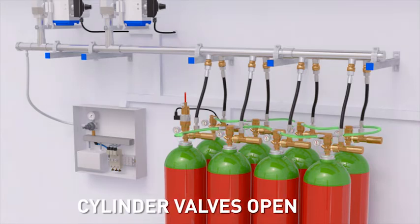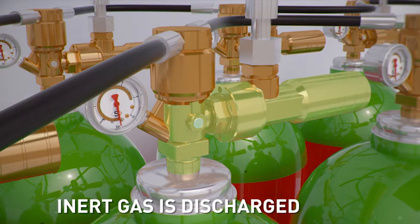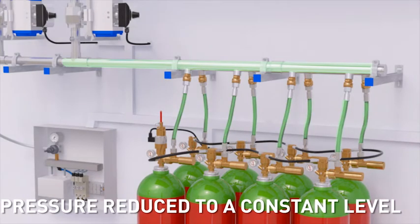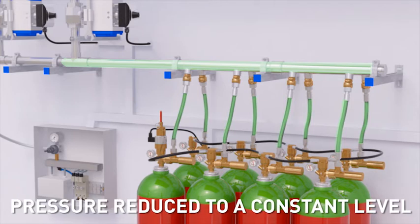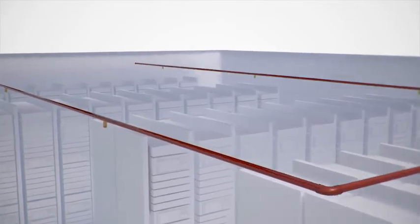The discharge of the master valve also triggers all the other cylinder valves to discharge at the same time. The gas is released through the pressure regulators which regulate the dynamic discharge pressure to a safe and constant level. Now at lower pressure, the inert gas travels through the discharge hoses to the manifold, through the piping to the nozzles.